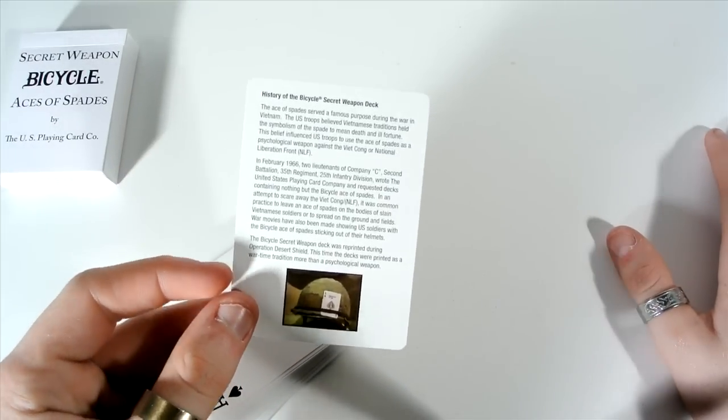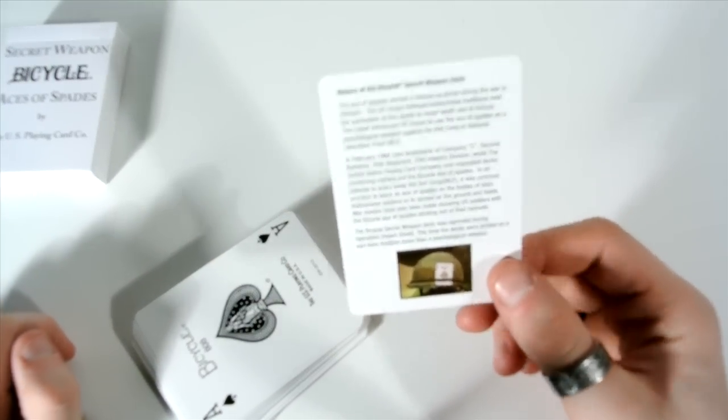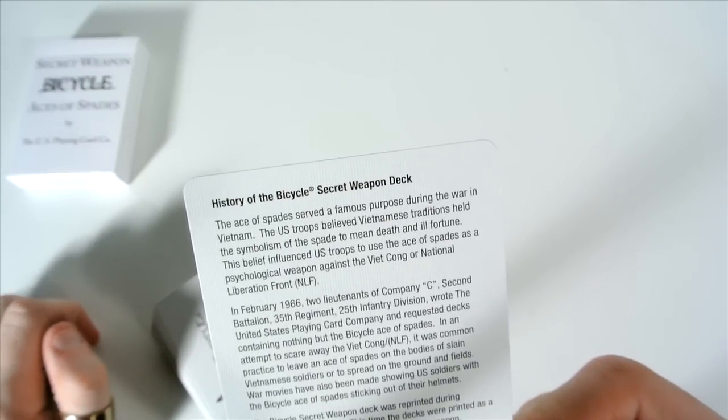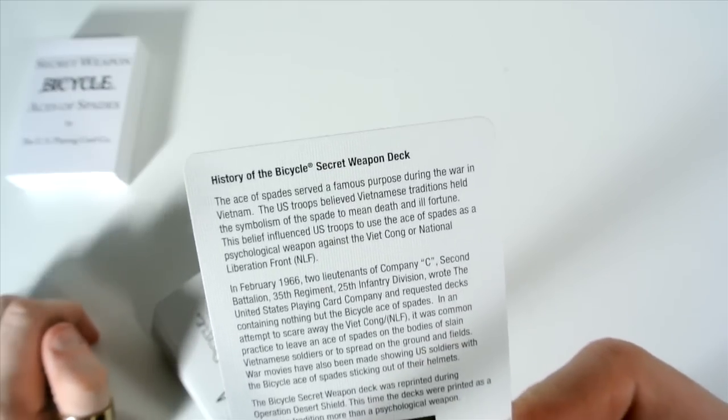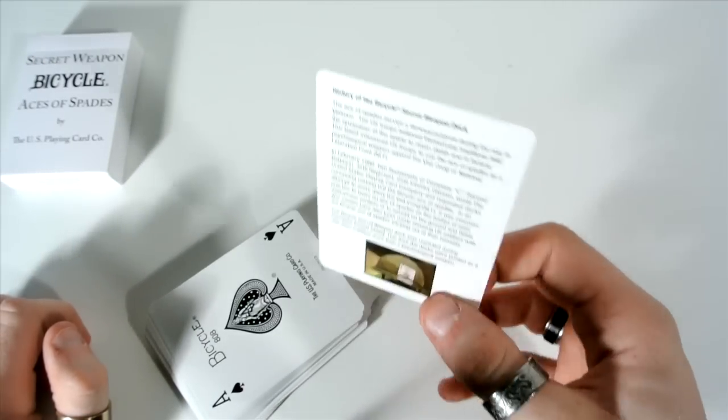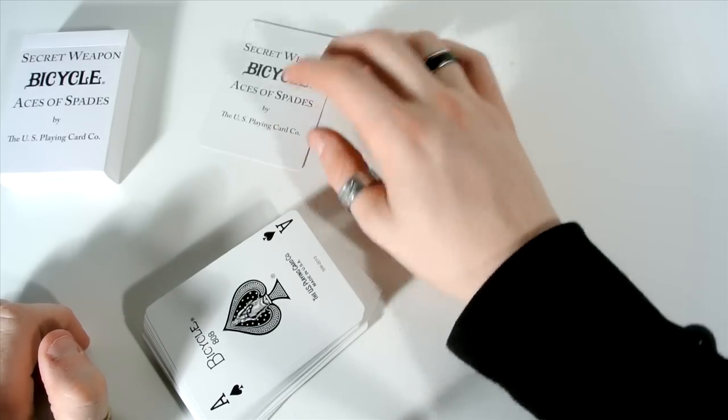So I'll read a bit of it - it goes: 'The Ace of Spades served a famous purpose during the war in Vietnam. The US troops believed Vietnamese tradition held the symbols of spades mean death, so they use that to kind of symbolise death.' So that's pretty cool there. Death's not cool but obviously it's a little advertisement card there.